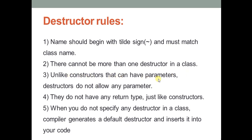Third, unlike constructors which can have parameters — as seen in the parameterized constructor and copy constructor (except the default constructor) — a destructor does not allow any parameters at all. This is a key difference between constructors and destructors. Fourth, similar to constructors, destructors do not have any return type — not even void, not integer, not float.